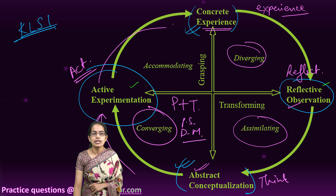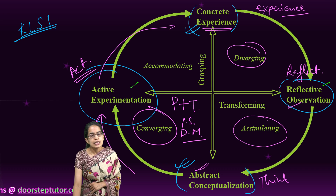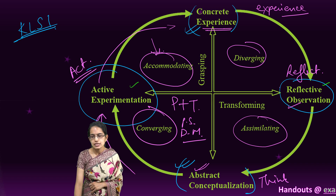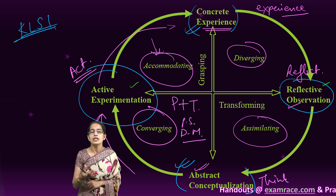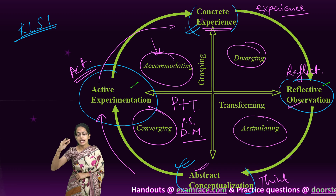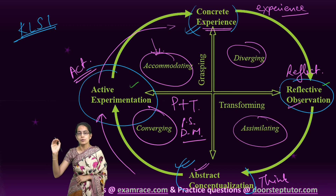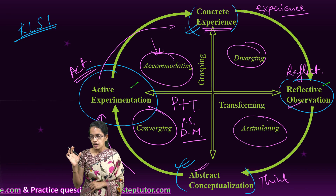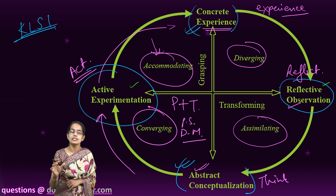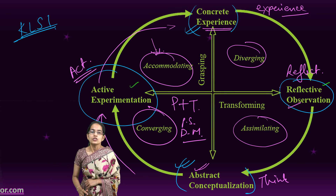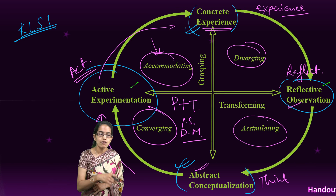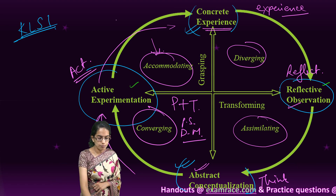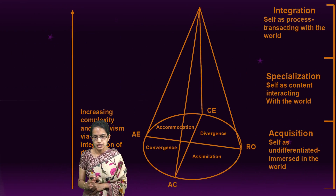Between active experimentation and concrete experience, we have accommodation or accommodating style. This talks about field work, setting goals, having an approach towards the project, and trying to focus on future plans that could be explained on the basis of hands-on experiences. This is where we have Kolb's learning cycle. The cycle itself is very important to understand under the experiential theory.